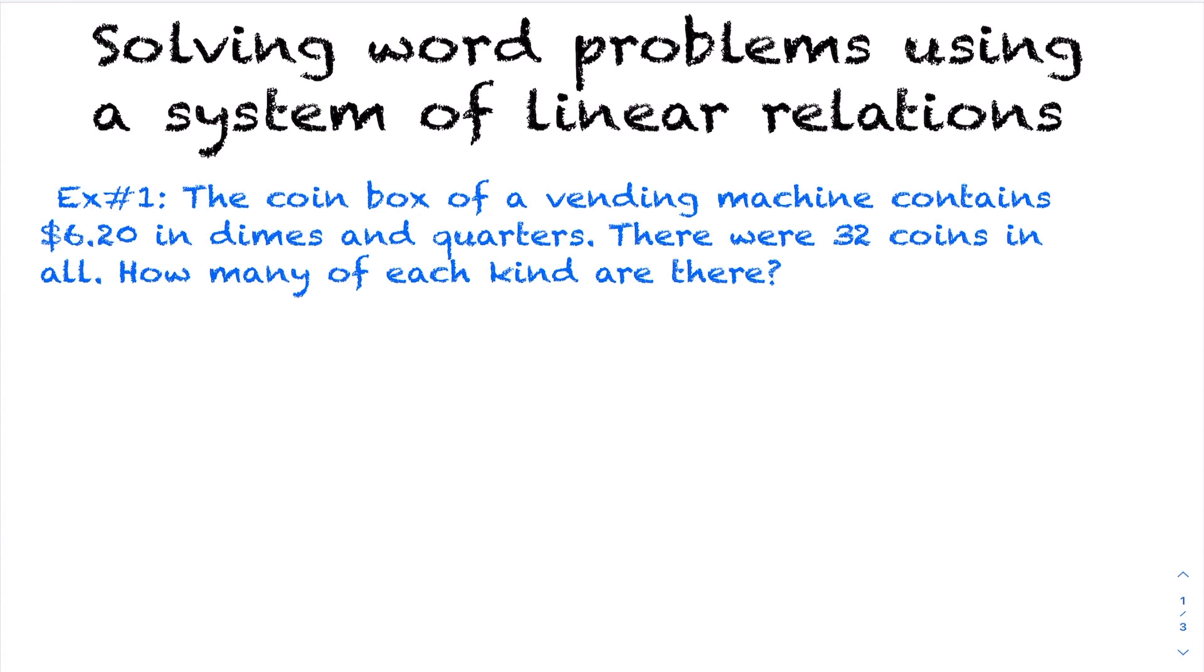All right, so now we're going to be looking at solving word problems using a system of linear relations. We spent some time already talking about the types of solutions, solving using substitution and elimination. I'll link that in the top right if you need help with any of those topics or haven't seen the videos. Now we're going to be looking at how you express a word problem as a system of linear relations and then eventually solve.